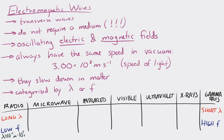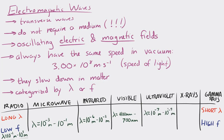Radio waves have wavelengths of about 10 to the minus 1 to 10 to the 3 meters. Microwaves go from 10 to the minus 3 to 10 to the minus 1 meters. Infrared is 10 to the minus 6 to 10 to the minus 3 meters. Visible light goes from about 400 to 700 nanometers. Ultraviolet goes from 10 to the minus 7 to 10 to the minus 9 meters. X-rays go from 10 to the minus 9 to 10 to the minus 12 meters. Gamma rays have wavelengths shorter than 10 to the minus 12 meters. These ranges are not absolute — some boundaries may vary — but this gives a general idea of the wavelength for each category.